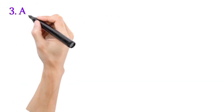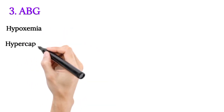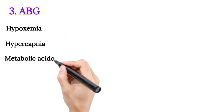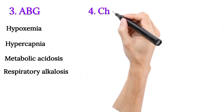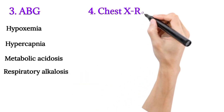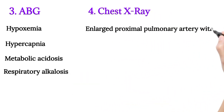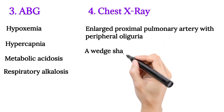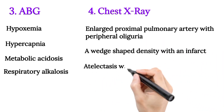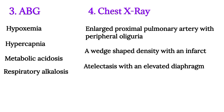Arterial blood gas findings include hypoxemia, hypercapnia, metabolic acidosis, and respiratory alkalosis. On chest X-ray, findings include enlarged proximal pulmonary artery with peripheral oligemia, a wedge-shaped density indicating an infarct, and atelectasis with an elevated diaphragm.